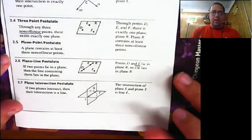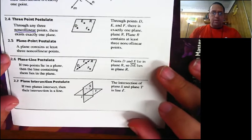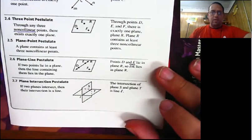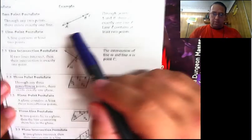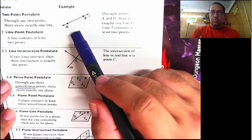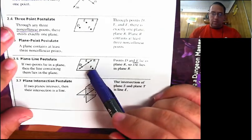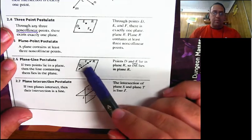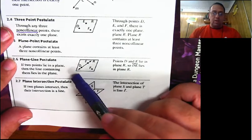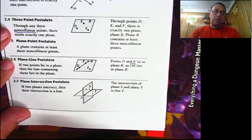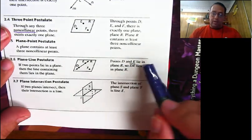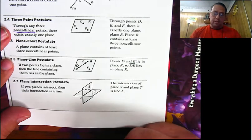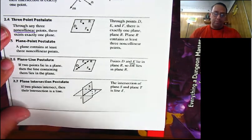Next we have the plane-line postulate. It says that if two points lie on a plane, then the line containing them lies in the plane. As we said, if we have two points there is a line that contains those two points. If those two points happen to be inside plane R, then the line that contains those two points is also inside plane R. So since point D and E are in plane R, then line DE also lies in plane R.